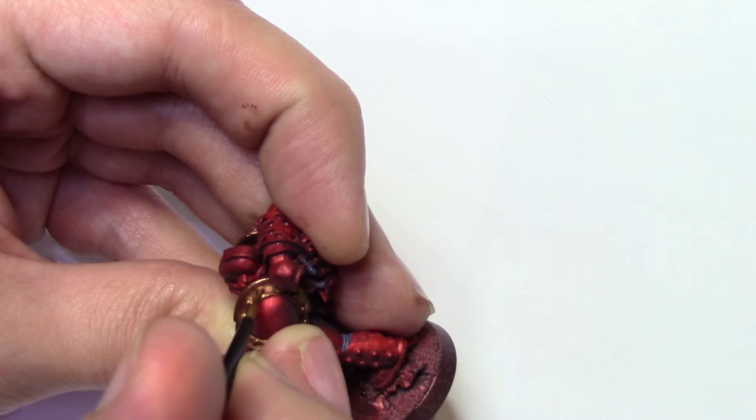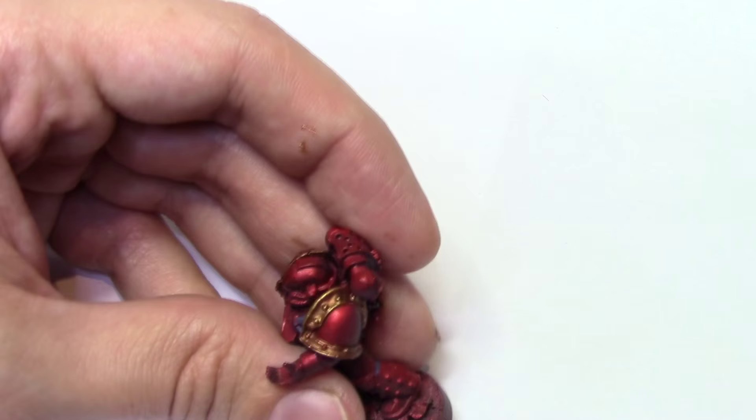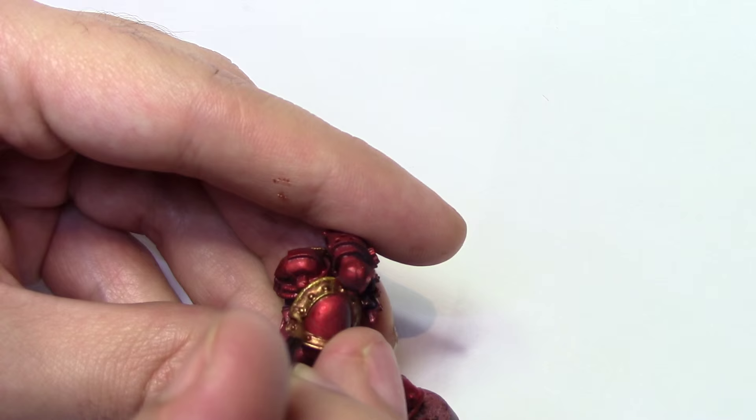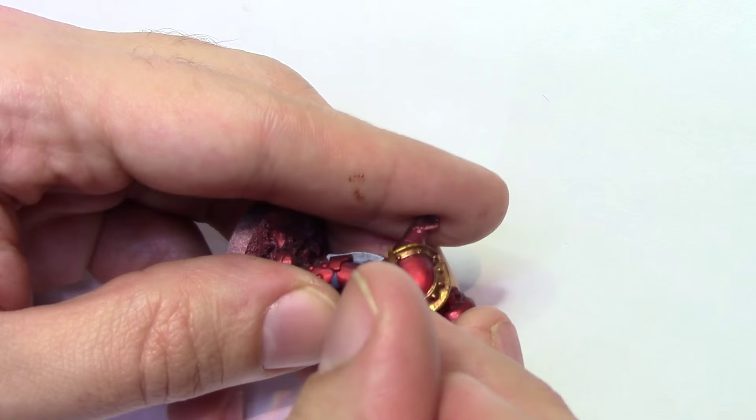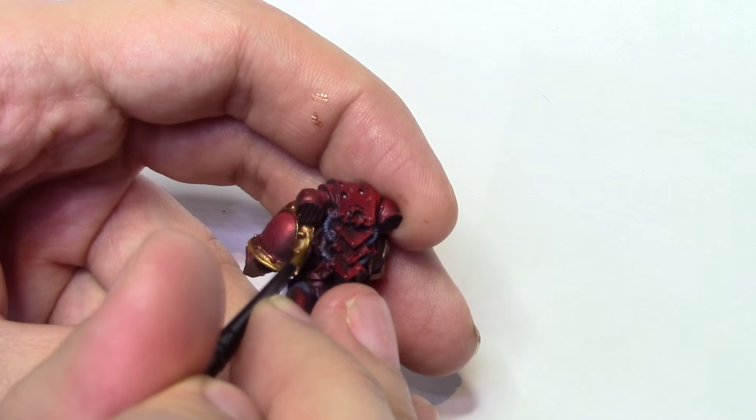Okay, now we're going to use Vallejo's Model Color Brass and we're going to start highlighting up the gold. So what I'm trying to do is leave the shadows created by the Agrax Earthshade in place and just go over parts of where we did with the base color originally. So you're starting to get a real definition between the gold colors. I mean, you could use this as the final layer if you wish to. I do add a couple more layers in just because that's the way I do it.